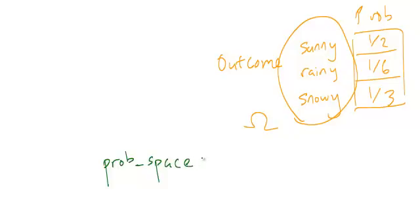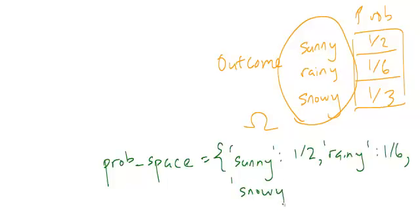equals sunny: one half, rainy: one sixth, snowy: one third. So we can represent it as a dictionary, like so.